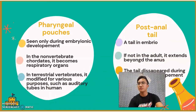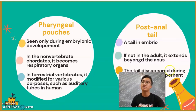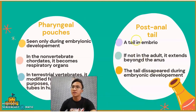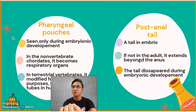The next characteristic is pharyngeal pouches. Pharyngeal pouches can only be seen during embryonic development. In non-vertebrate chordates, they become respiratory organs. But in terrestrial vertebrates, they are modified for various purposes, such as auditory tubes in humans. The last characteristic is the post-anal tail. It is a tail in the embryo, extending beyond the anus, and it disappears during embryonic development.